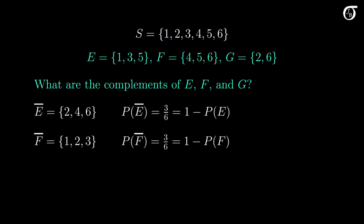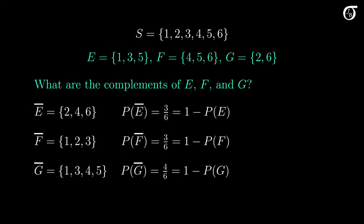G is made up of the numbers 2 and 6, so G complement is made up of the other numbers in the sample space: 1, 3, 4, and 5. The probability of G complement is 4 over 6, which equals 1 minus the probability of G.